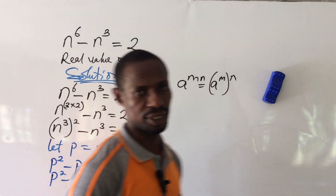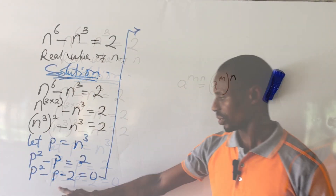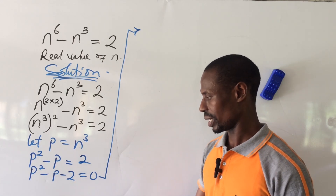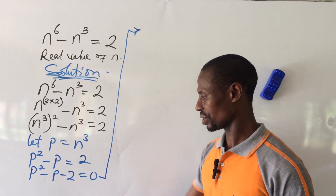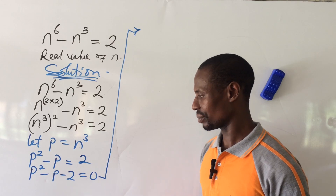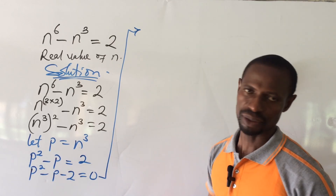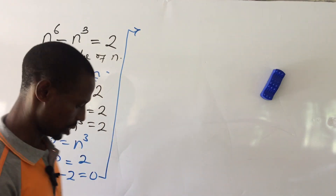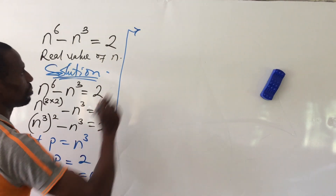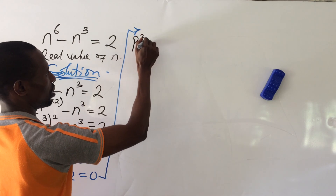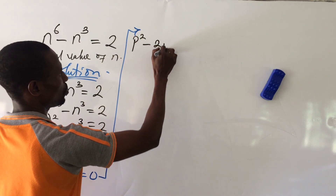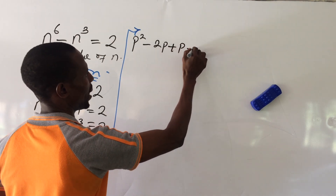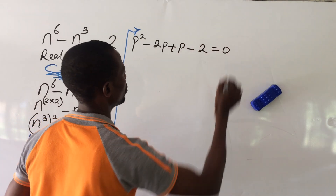This is a quadratic equation. Factorizing, we think of two numbers from the factors of 2 that multiply to give us minus 2 and add to give us minus 1. The two numbers are minus 2 and plus 1. So we rewrite as p squared minus 2p plus p minus 2 equal to 0.